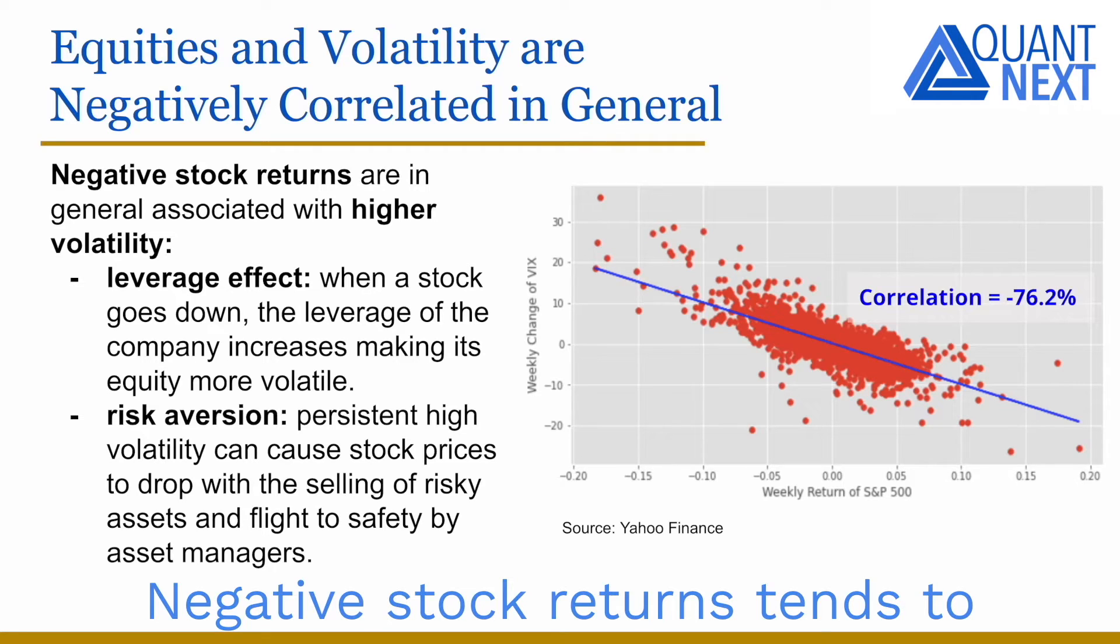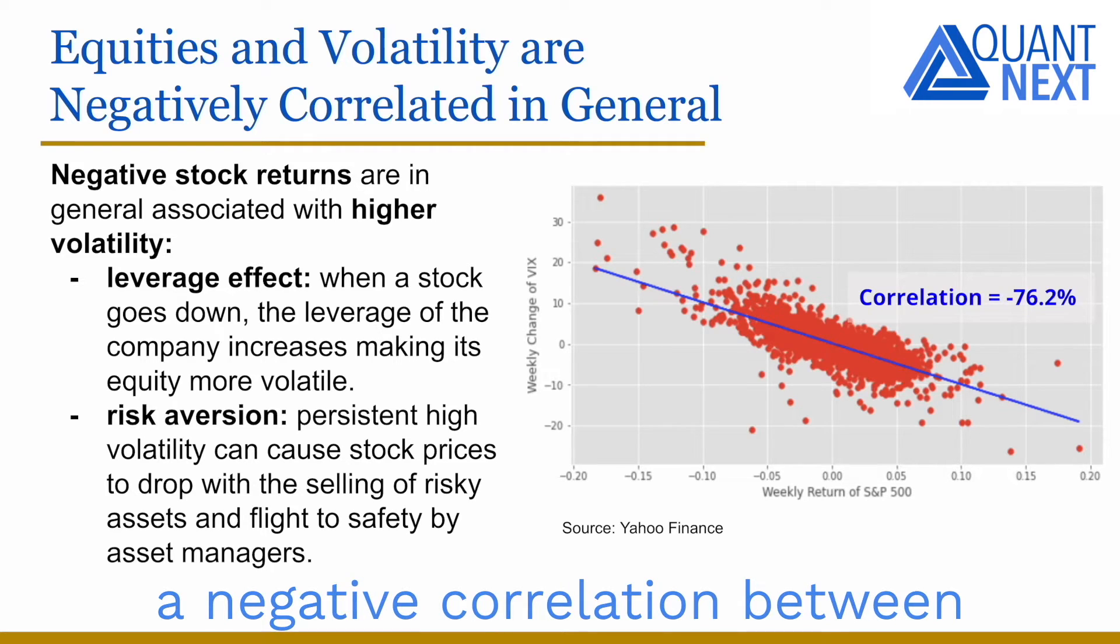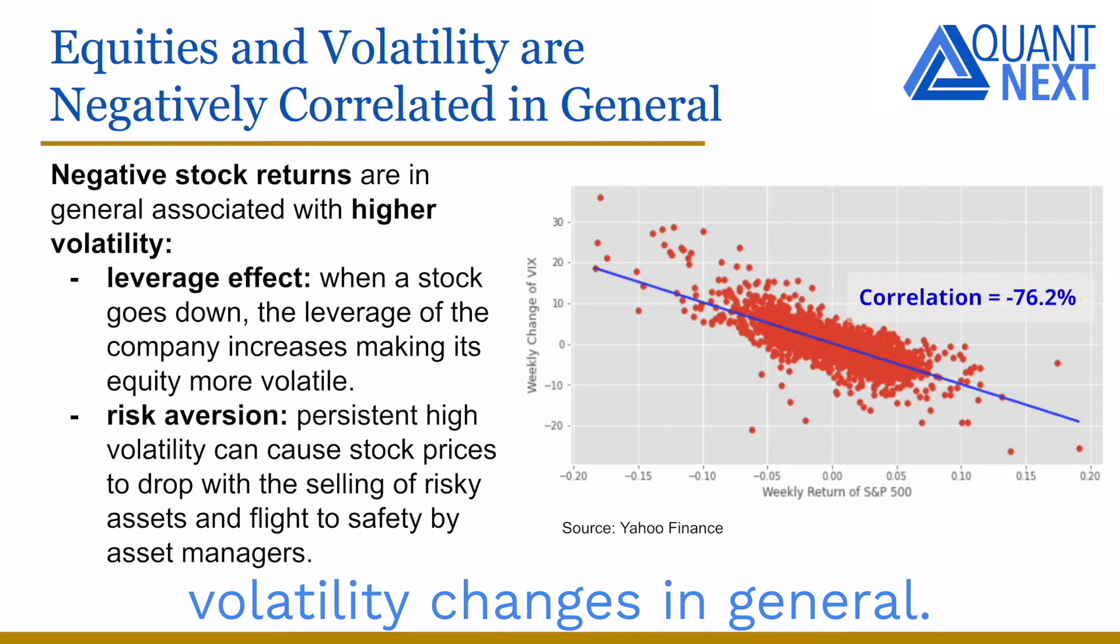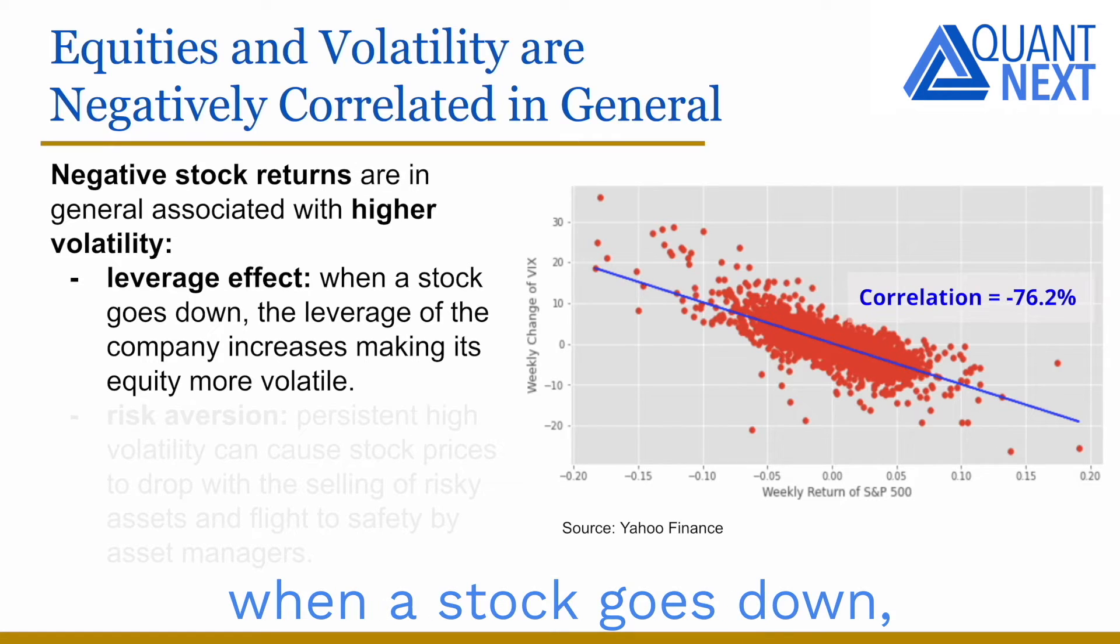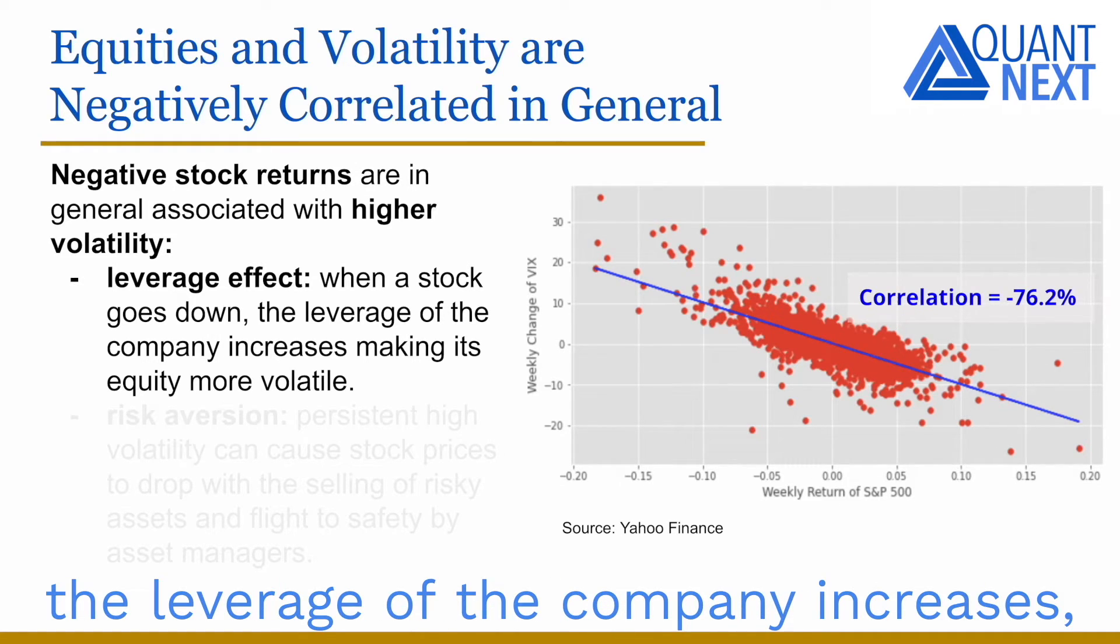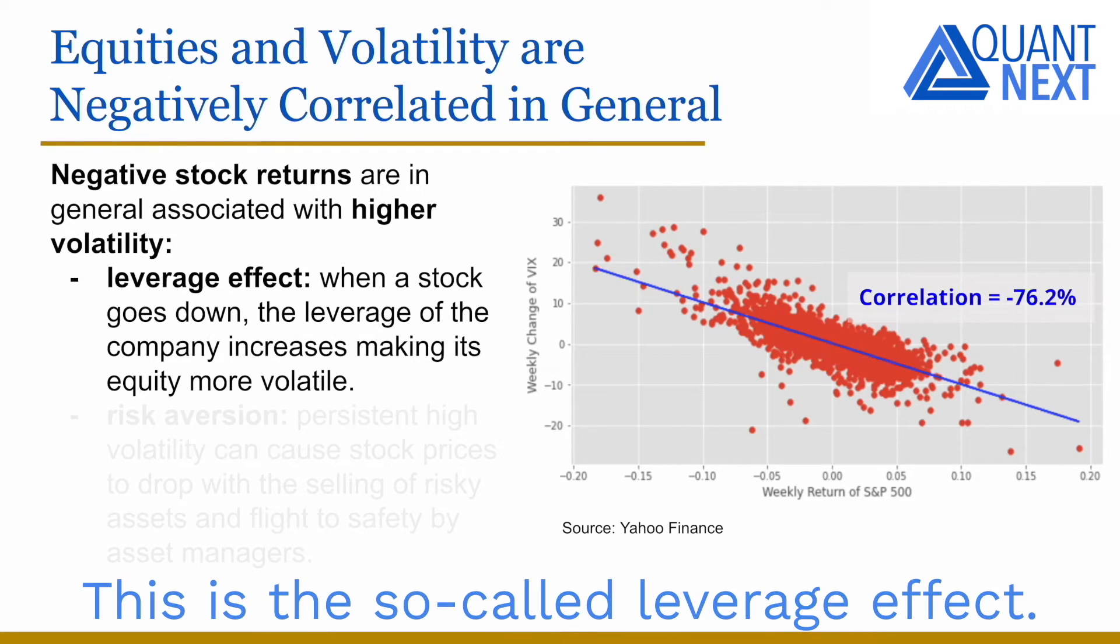Negative stock returns tend to be associated with higher volatility, and we observe a negative correlation between stock returns and volatility changes in general. There are two main explanations for this in the literature. On the one hand, when a stock goes down, the leverage of the company increases, making its equity more volatile. This is the so-called leverage effect.